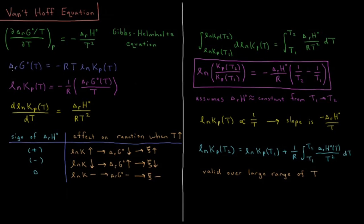We'll remind ourselves that ΔRg° at a specific temperature equals −RT ln Kp at that temperature. So ln Kp at a given temperature is −(1/R) times ΔRg°/T.